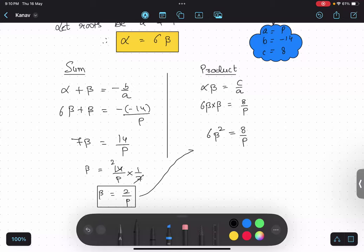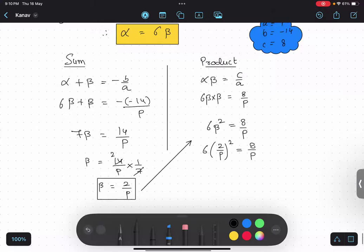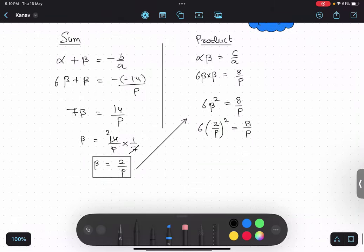I will substitute this value over here. So six multiplied two upon p whole square equals to eight upon p. So let us solve this thing a little bit further. Six multiply four upon p square equals to eight upon p. So I will just do the cross multiplication.